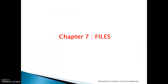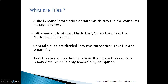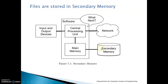Today we will be going ahead with files, which is the remaining chapter from Module 2. What are files? A file is some information or data which stays in the computer storage device. Till now we have been seeing how we write a program, but if you want to store data onto secondary memory, we make use of files. The different kinds of files are music files, video files, text files, multimedia files, etc. Generally you categorize them as text files and binary files, where text files are simple text, whereas binary files contain binary data which is only readable by a computer.